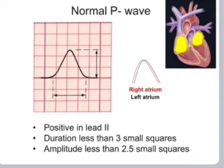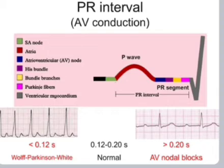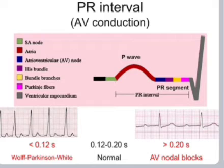Patterns of atrial enlargement in P waves are assessed in Lead II and V1. In abnormalities: a biphasic P wave indicates atrial abnormality; an M-pattern in Lead II indicates left atrial enlargement; a tall P wave in Lead II or V1 indicates right atrial enlargement. PR interval indicates AV conduction: less than 0.12 seconds is seen in WPW syndrome; 0.12 to 0.20 seconds is normal; more than 0.20 seconds indicates AV nodal block.